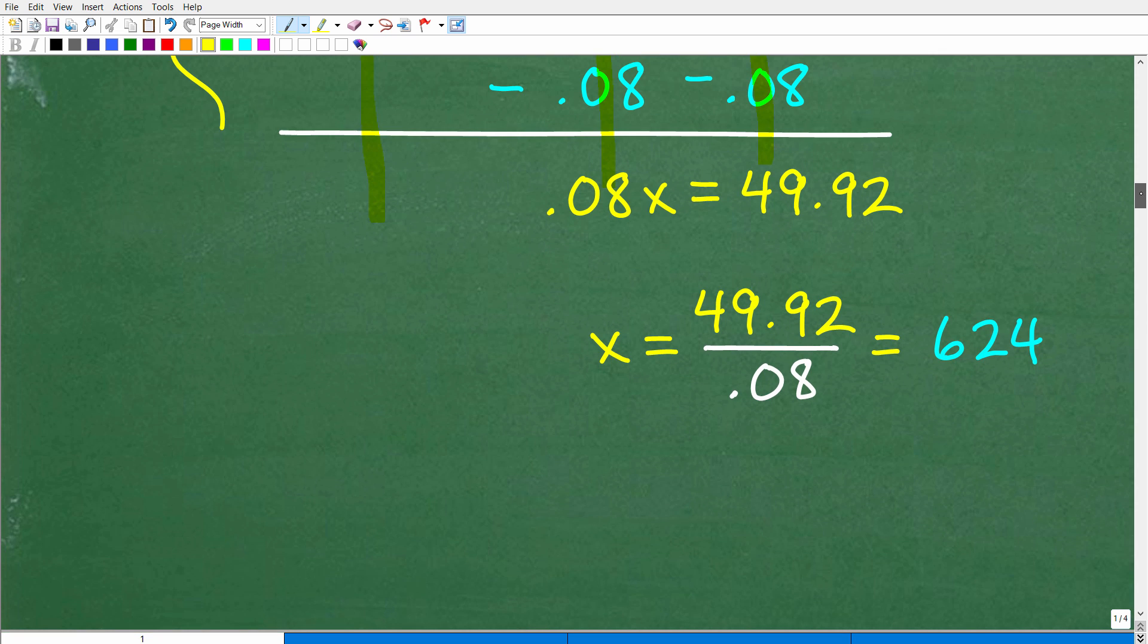How do we solve for X? Easy. We're simply going to divide both sides of the equation by 0.08. So now we're just going to our calculator. I'm going to go 49.92 divided by 0.08. You will get 624.